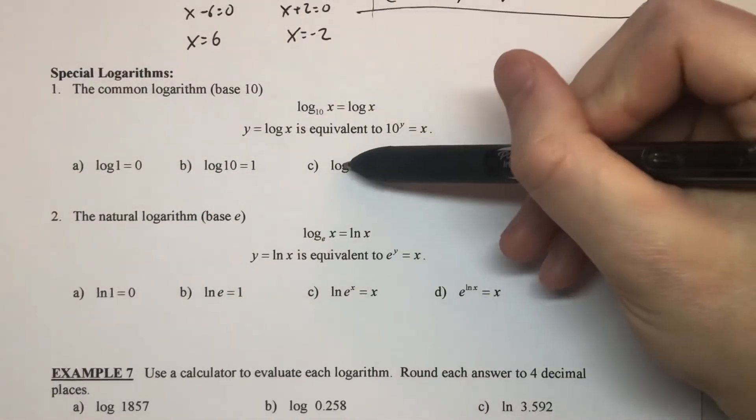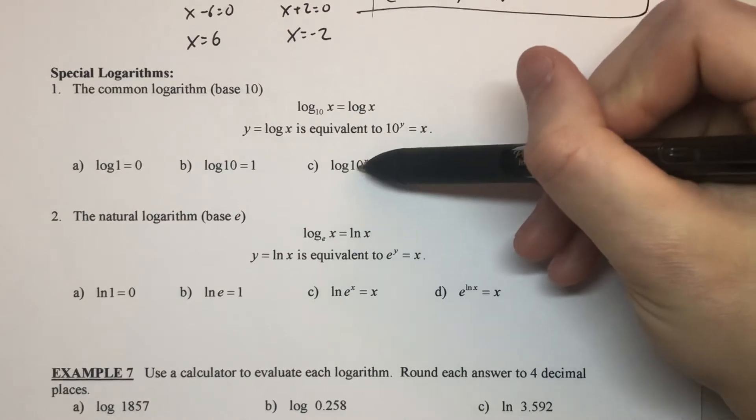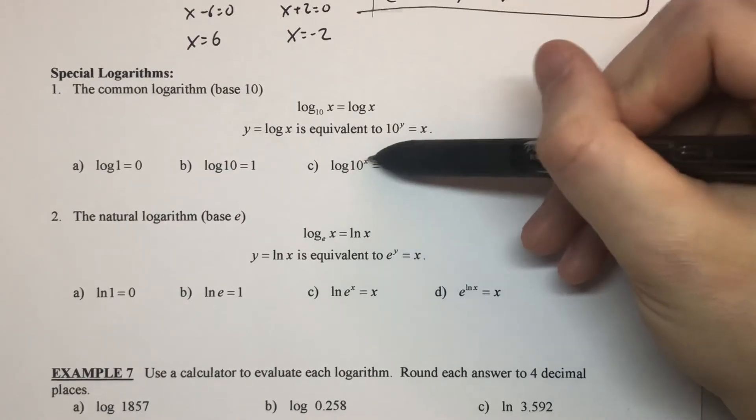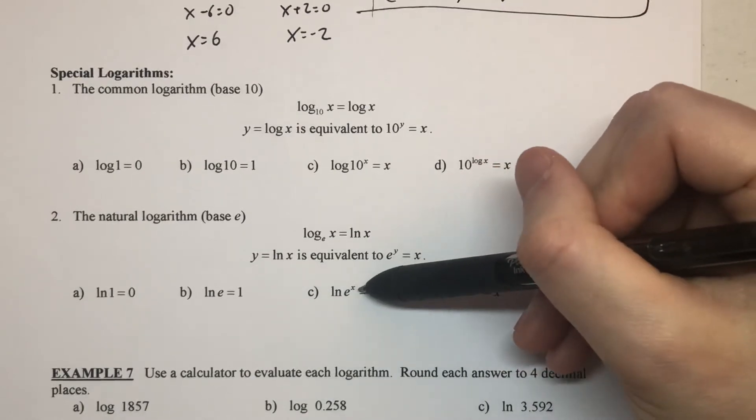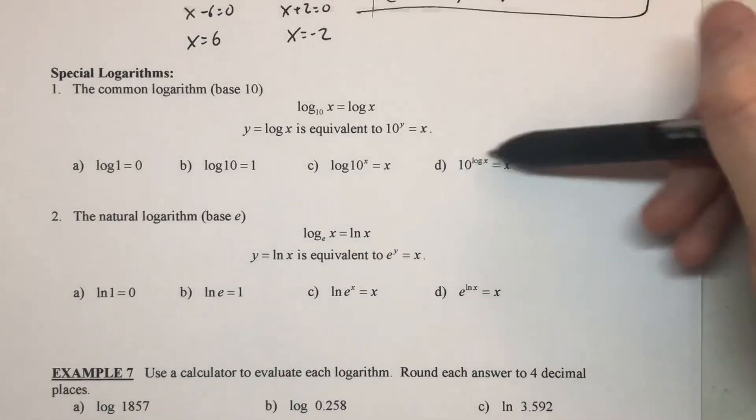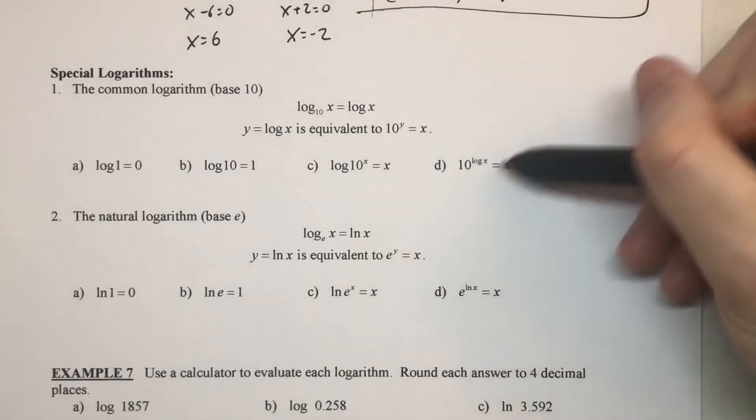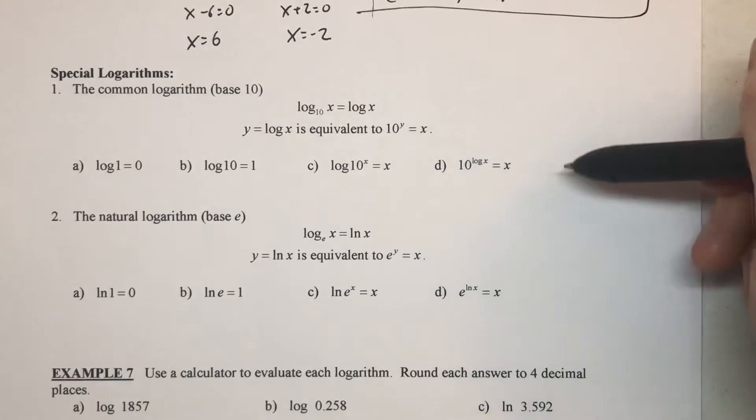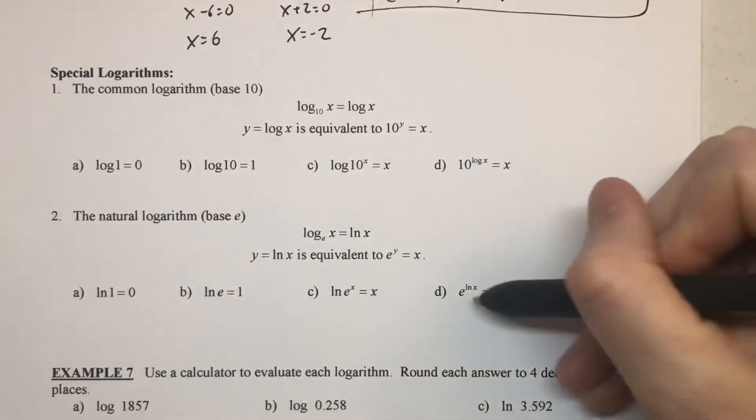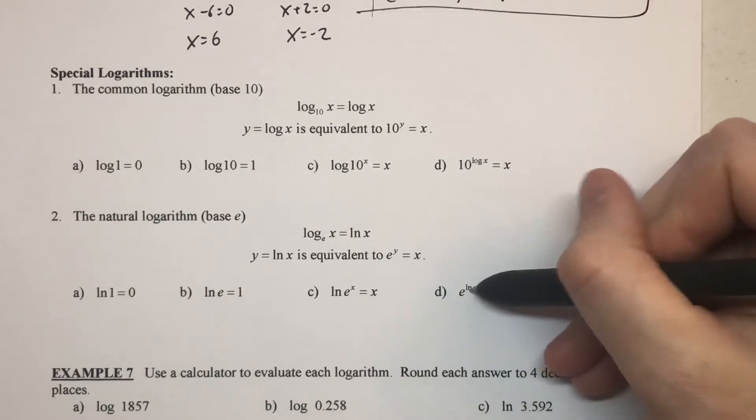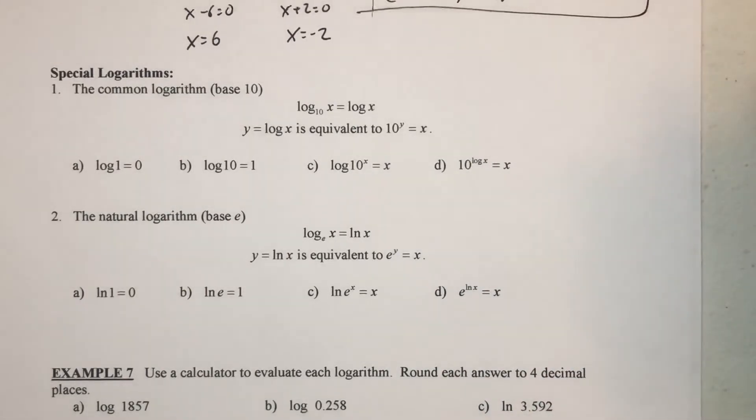Then these two: log base 10 of 10 to the x—the bases match so you get out the x. Just like ln is log base e of e to the x, so the e bases match so you get out the x. And then these two are the more convoluted looking ones with a logarithm up there in the exponent. But when you don't see the base, it's a 10, so the bases match, you get x. And ln is log base e, the e's match, you get x.